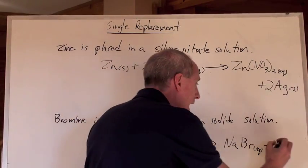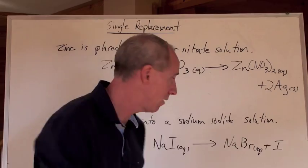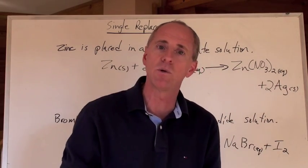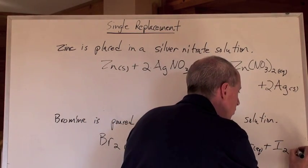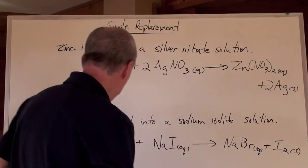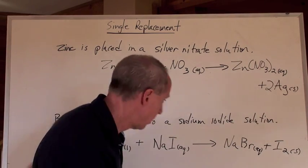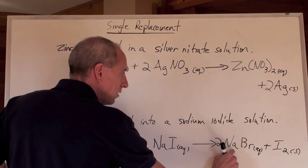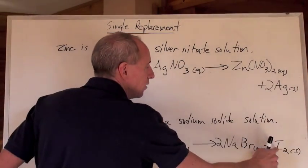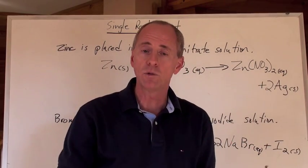So NaBr is aqueous. What goes off by itself? Iodine does. Group 17 — it's I2. Iodine is a solid at room temperature, so we put solid. Now we've got an equation to balance. We've got 2 Br's on the left and 1 Br on the right, so put a 2 in front of NaBr. Now you've got 2 sodiums, so put a 2 in front of NaI. 2 Na's, 2 Br's, 2 Na's, 2 I's — it's balanced. That's single replacement reactions.